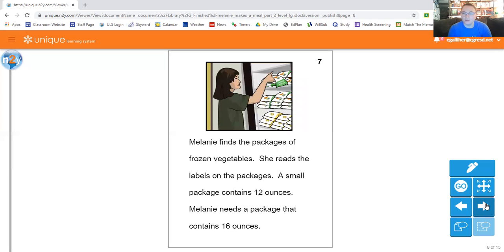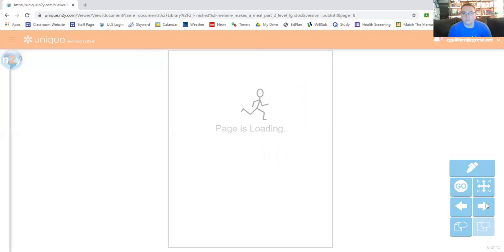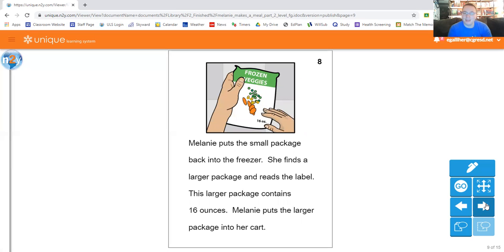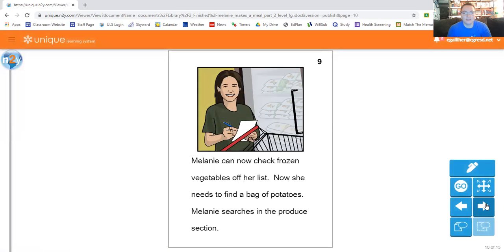Melanie needs a package that contains 16 ounces. So what do you think she might do? Let's see. Melanie puts the small package back into the freezer and she finds a larger package and reads the label. This package contains 16 ounces. Perfect. She found the right size. Melanie puts the larger package into her cart.